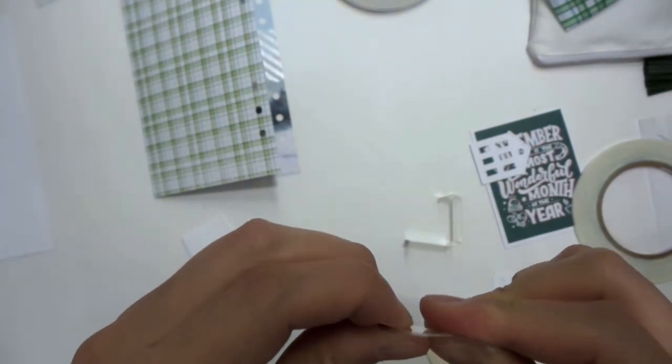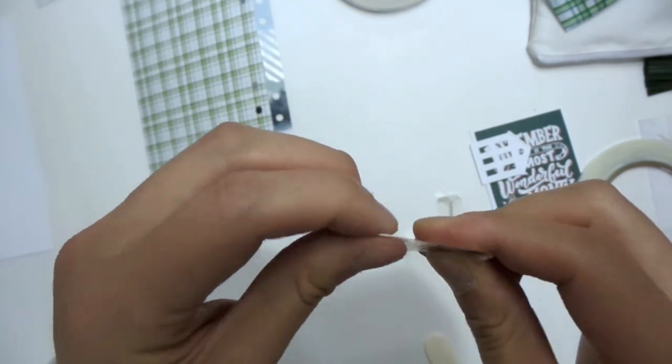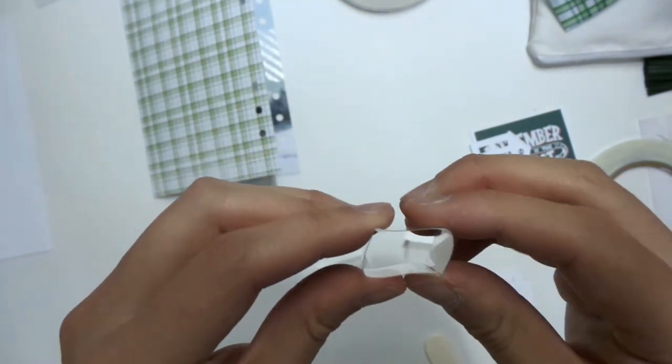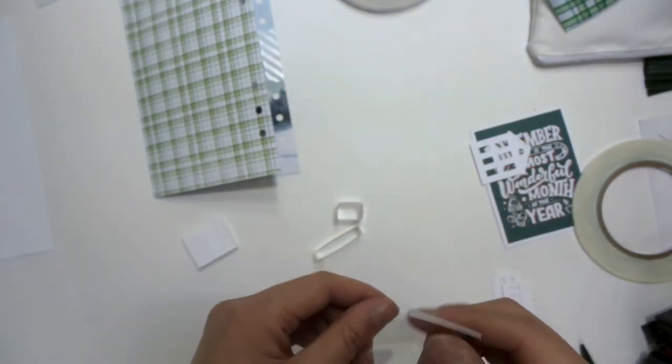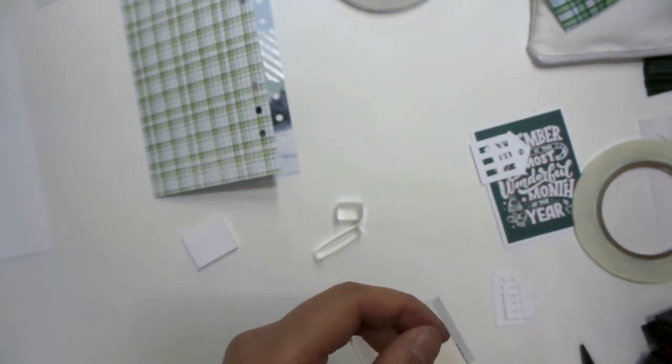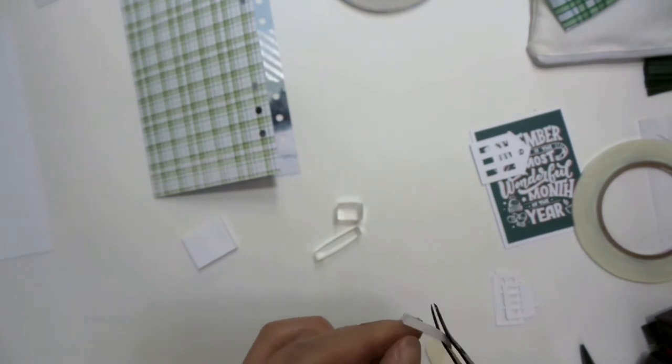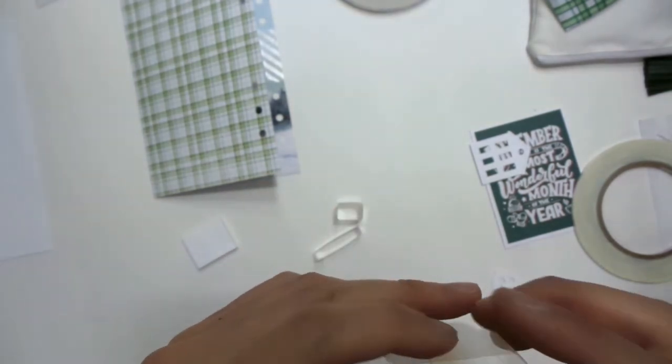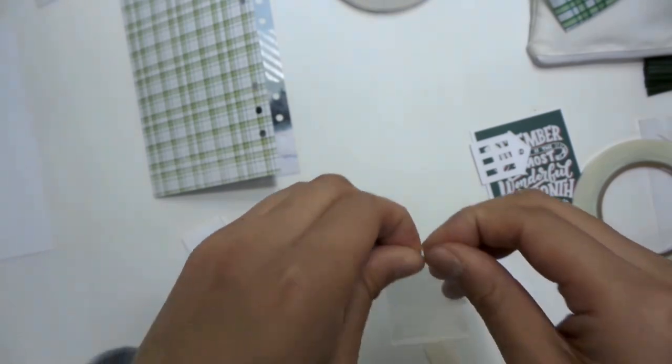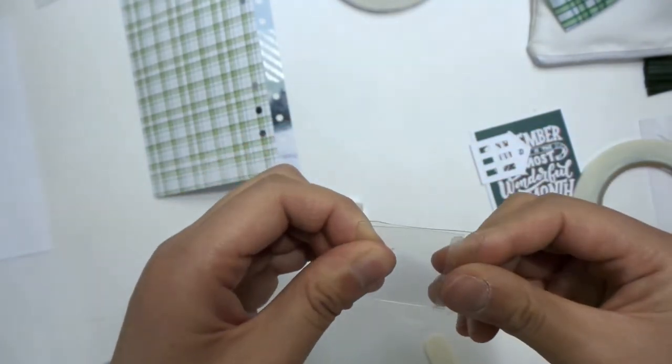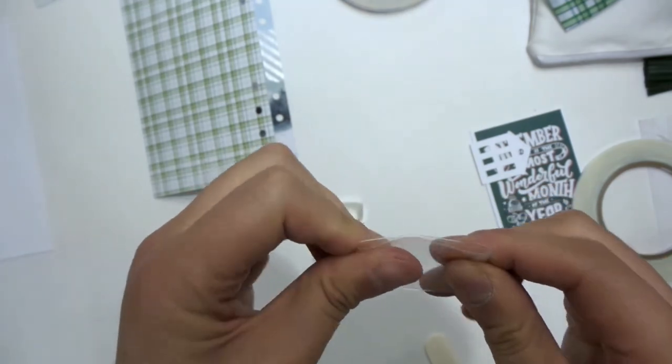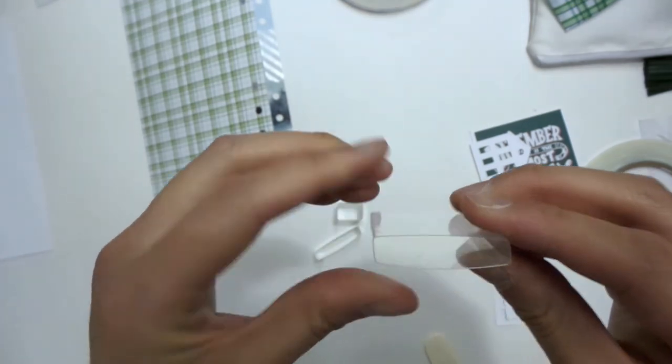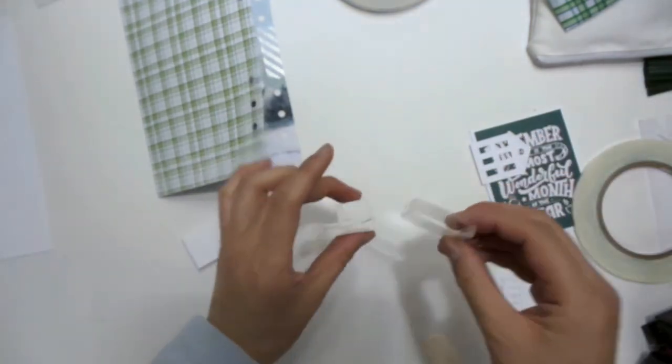And you just want to make sure that when you're folding it, that it will lie flat, regardless of which way you fold this rectangle. There we go. So we have our three rectangular pieces.